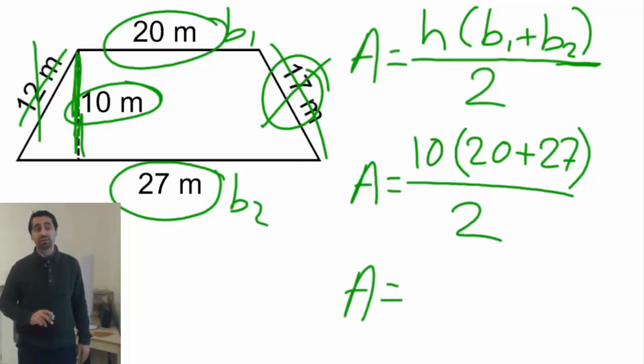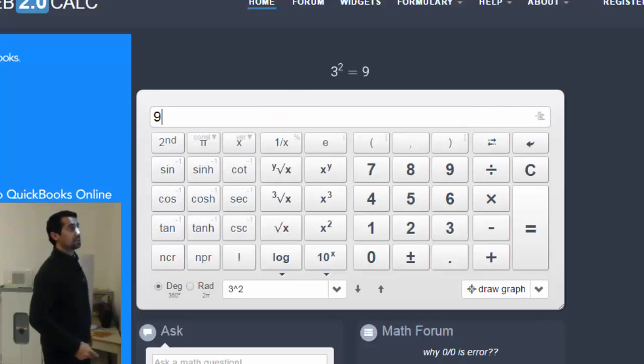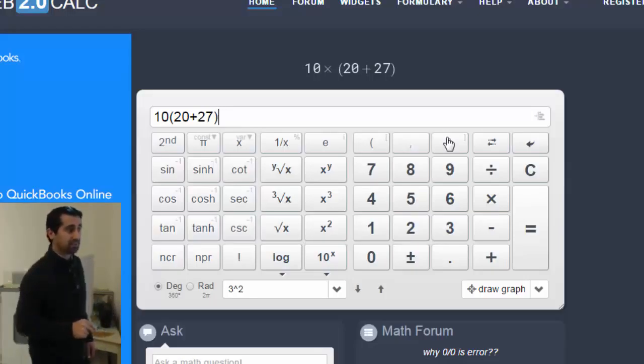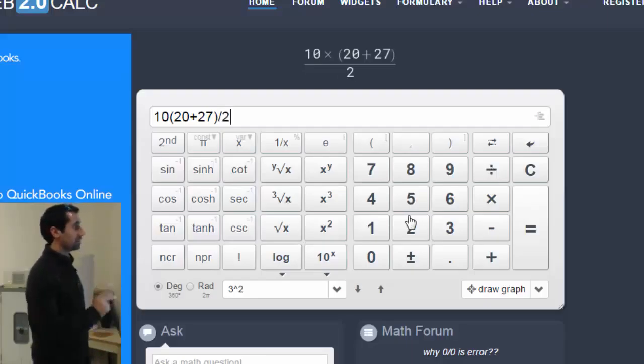And how about the results? That's not even complicated. It's just calculation work. Calculator. So I'm going to do 10, open bracket, 20 plus 27. Okay. 10, open, oops, let's clear that. 10, open bracket, 20 plus 27, close bracket, and then divide it by 10. I'm sorry. 2, divided by 2. Alright. So I'm just following the formula here.